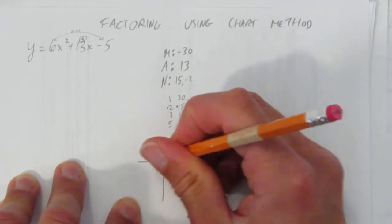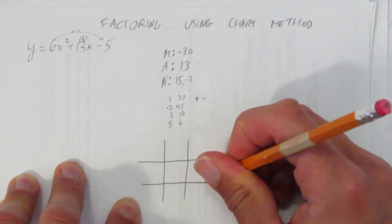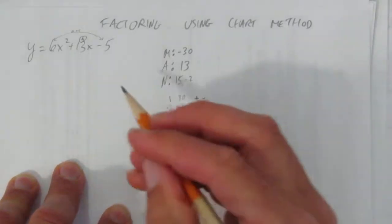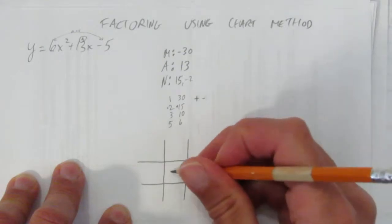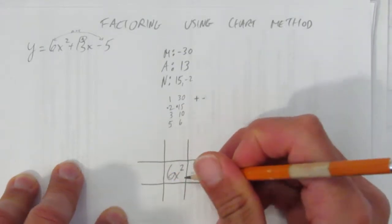Here's how chart method works. Start with a tic-tac-toe board. And follow carefully. Always this thing goes right in the middle. The x squared term right in the middle.